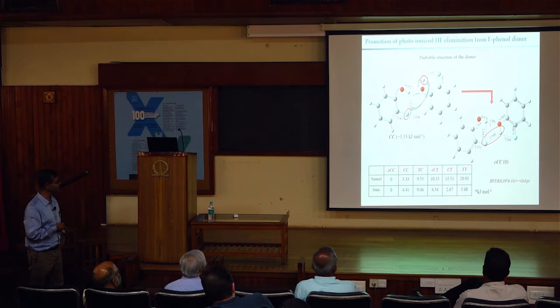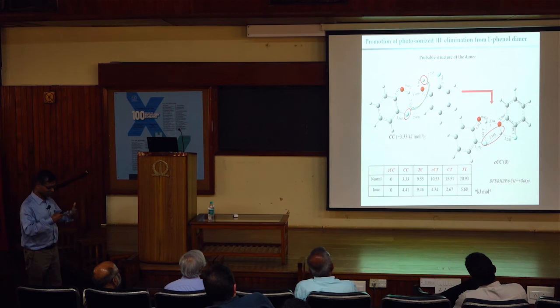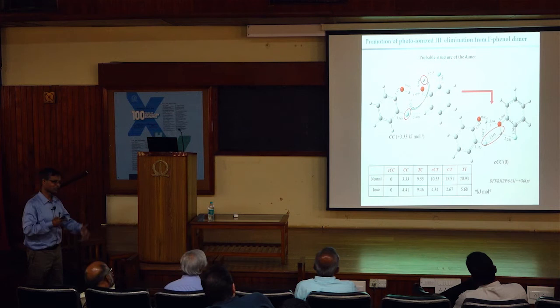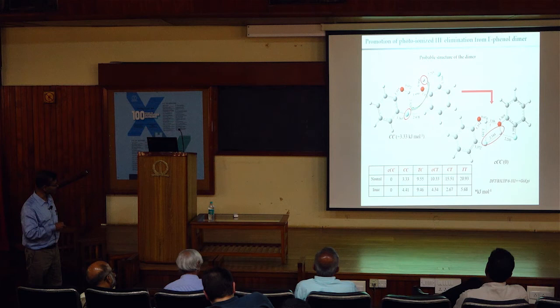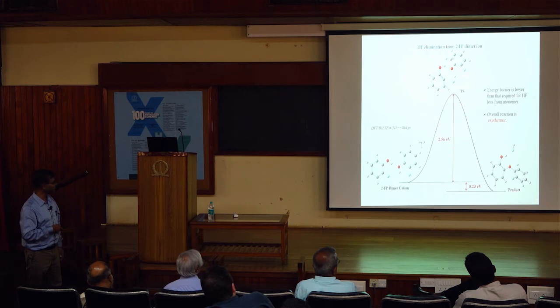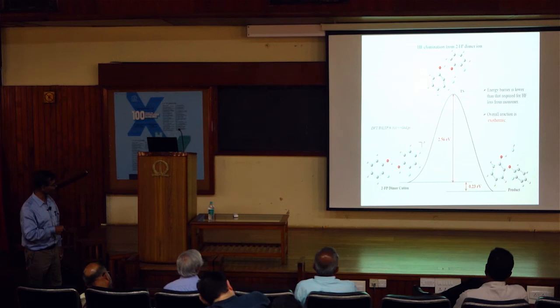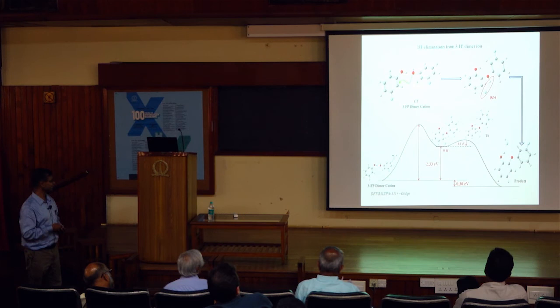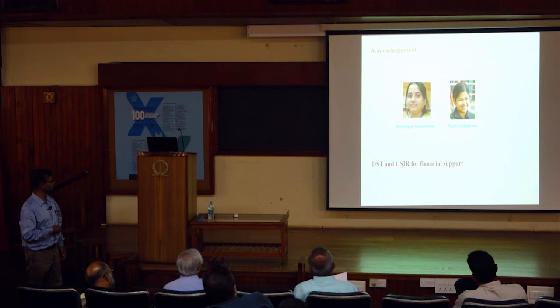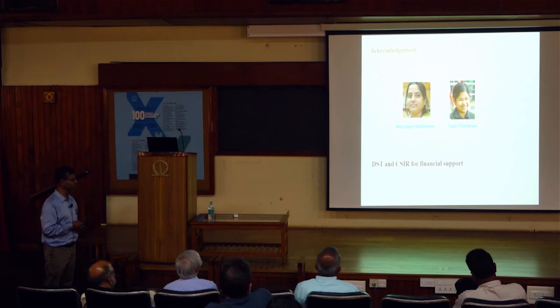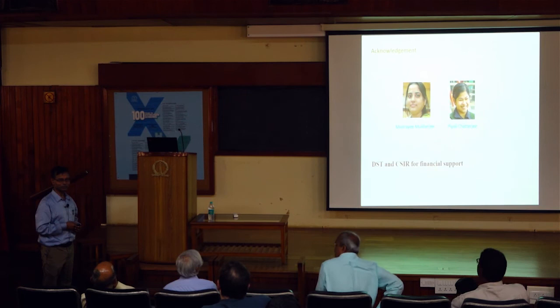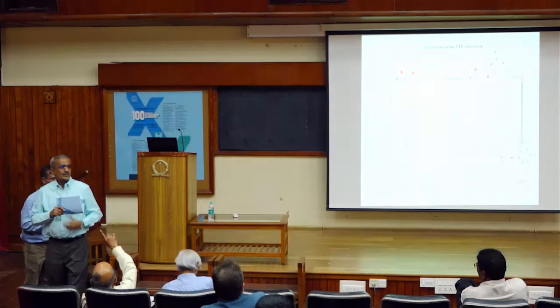We performed electronic structure calculations to understand the probable geometry — since the donor and acceptor groups are nearby, a double hydrogen bond cyclic network is the most probable ground state geometry. Because of photoionization, the geometry changes and the favorable reaction channel is favored. In the case of orthofluorophenol, product formation and hydrogen bonded release becomes energetically favorable; it is not that favorable for metafluorophenol. These are the students who got their PhD degrees contributing to these projects. Thank you all for listening.